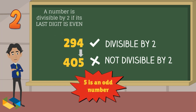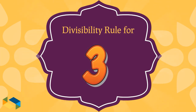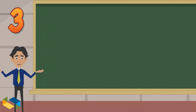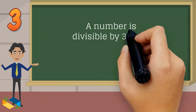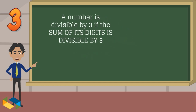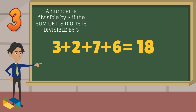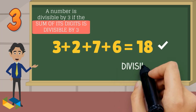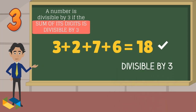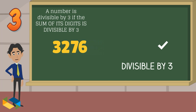Any number is divisible by 3 if the sum of its digits is also divisible by 3. Take, for instance, the number 3,276. The sum of its digits is 18, which is clearly divisible by 3, so 3,276 is also divisible by 3.